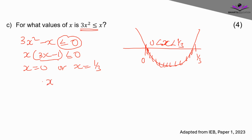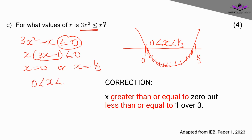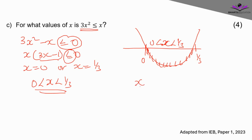The solution is 0 ≤ x ≤ 1/3. If you have a 'less than or equal to' inequality like this, put your inequality signs between the lower critical value and the upper critical value. The lower critical value comes from the left and the upper from the right. Since we have less than or equal to, we write 0 ≤ x ≤ 1/3.